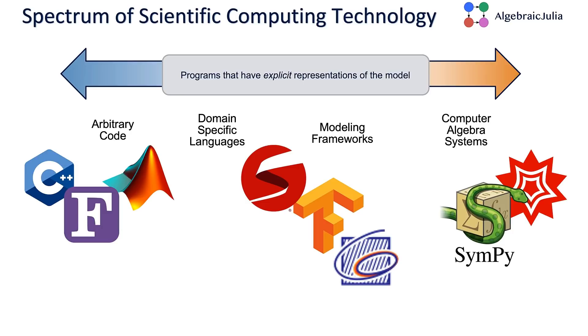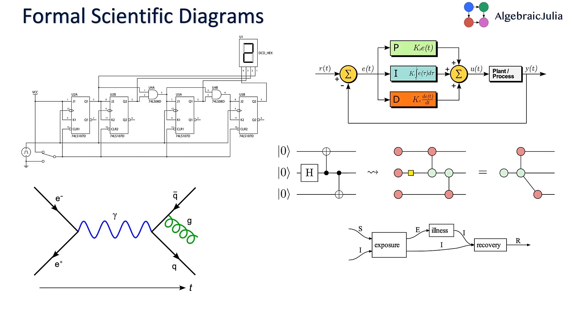At the other end of the spectrum are computer algebra systems, where you have explicit representations of the model as a mathematical expression. You can use algorithms that produce analytic solutions to solve these systems. But lots of systems don't have analytic solutions, and writing code manually is hard and time-consuming, so people develop modeling frameworks. These tools have this explicit representation of the model but compute numerical solutions.